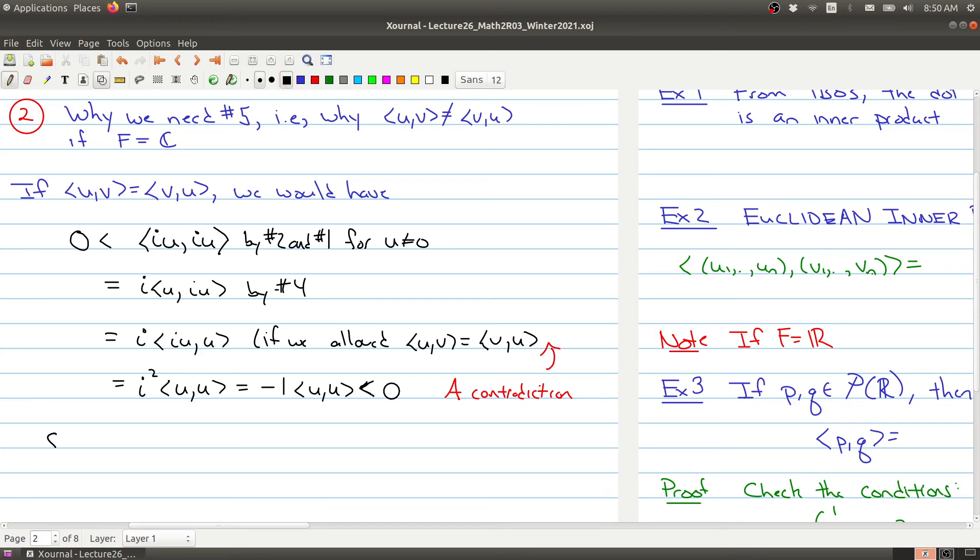And the reason that we were led to a contradiction is because we allowed this. So uv cannot equal vu if f is the complex numbers. So that just hopefully gives you some explanation. And this is kind of a big difference between what you would have seen in maybe math 2LA3. So this is why we have to pay very special attention when we're dealing with complex numbers and inner products. In the next part of today's lecture, I'll give some examples.